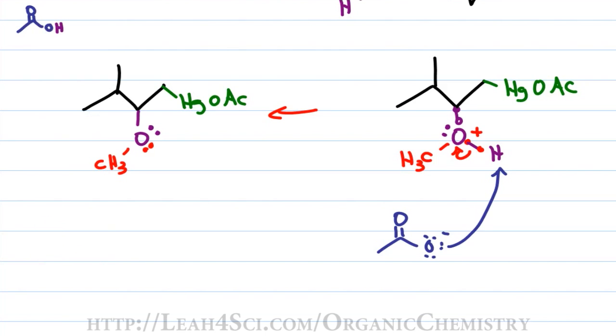Let's move that out of the way. Now this is where you notice the key difference between oxy and alkoxymercuration. Oxymercuration gave us an alcohol as the final product but here we have an oxygen bound to an alkyl group so in this case it's not a hydroxy but a methoxy which means our product is an ether.